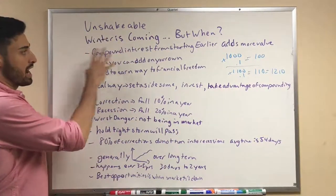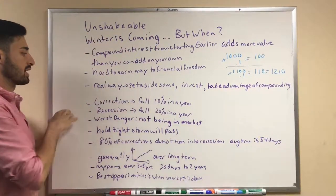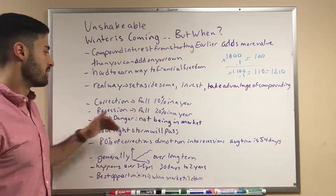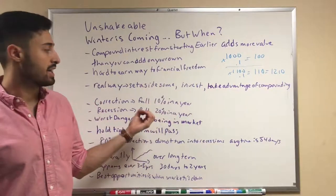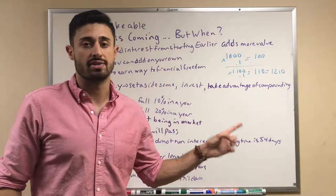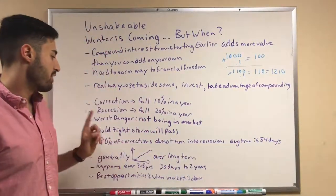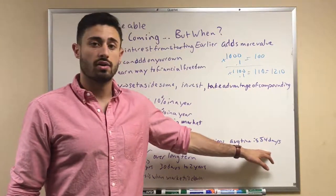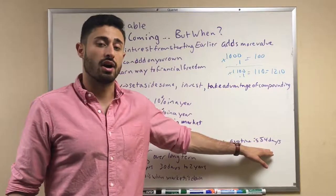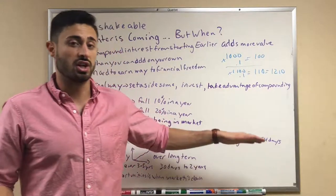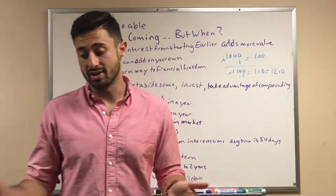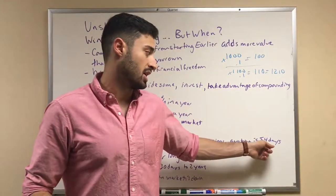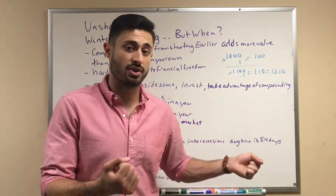So now that you understand how you can take advantage of compound interest, let's take a couple of other things into consideration—a couple terms you might not know. There's a market correction. What is that? If there's been a fall of 10% in a year. Now that happens on average every single year for 54 days on average. So there's going to be a time period every single year almost since 1900, I believe it was, that there has been a market correction where the market corrected 10%.